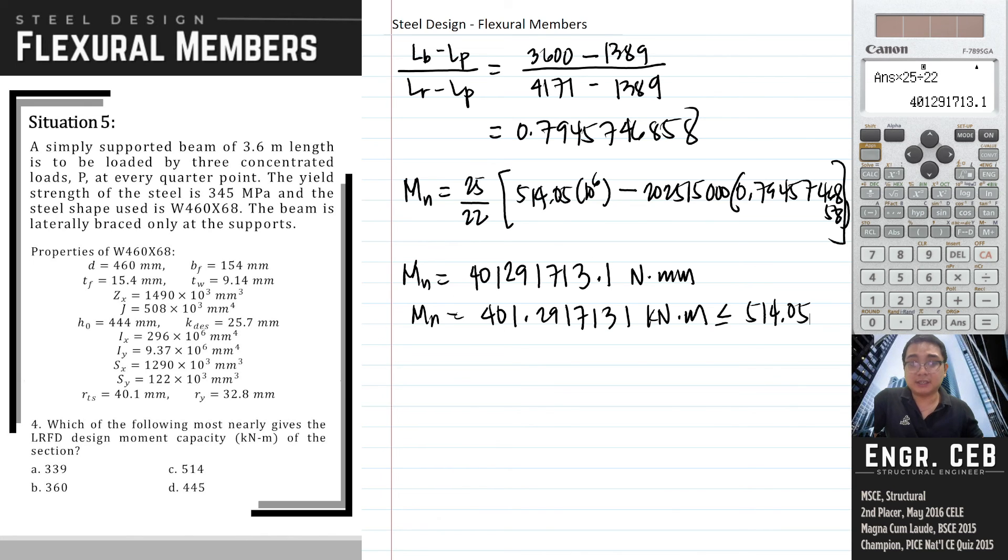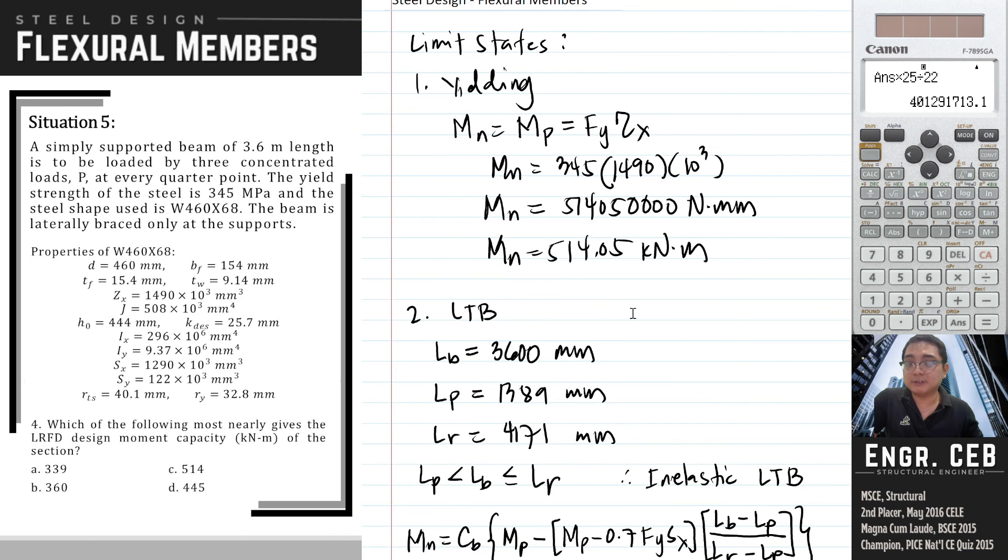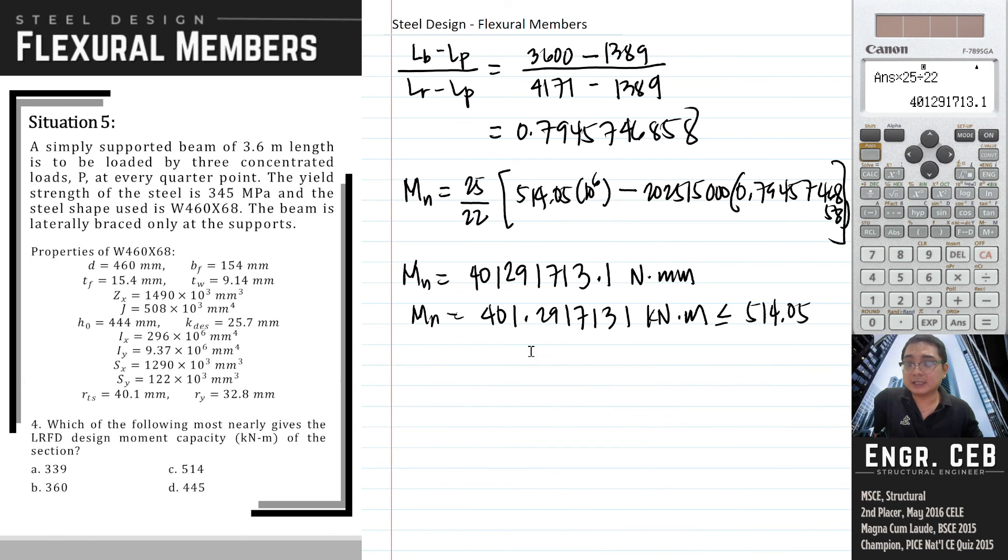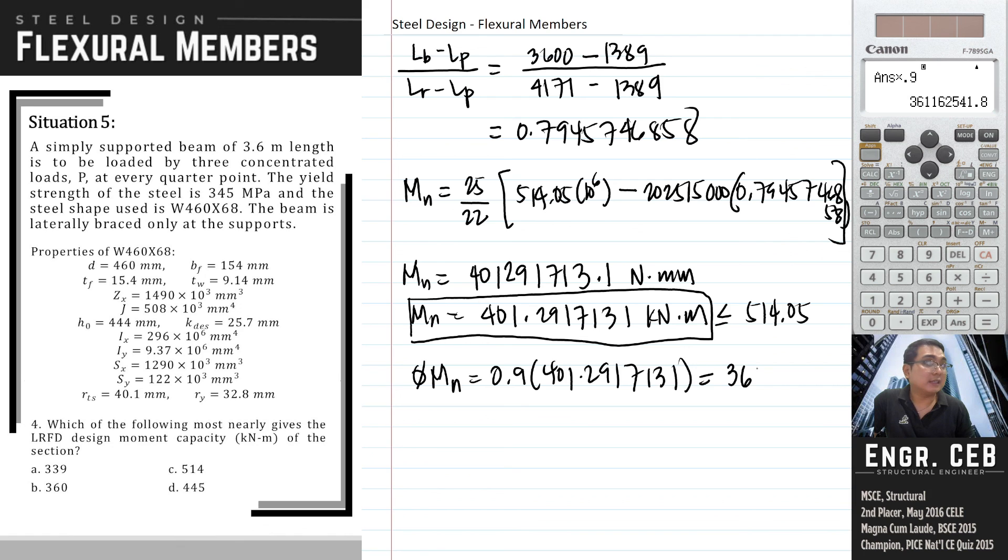Comparing all the limit states, considering the yielding limit state we have 514, considering LTB we have 401. Therefore, the minimum of all the limit states governs. So this is our nominal moment strength. To compute for the design moment capacity, we just multiply this by the resistance factor 0.9. So that is 361.1625 kN·m. So the nearest is letter B.